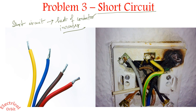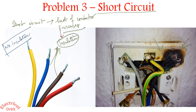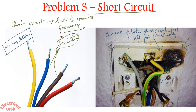The third reason is short circuit. When a short circuit occurs, the heat of the conductor increases. If heat increases, the insulation over the conductor gets damaged. If there is no insulation over two conductors, the current of both conductors will flow simultaneously, and obviously the value of current will increase — the result is the MCB will trip.